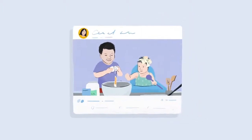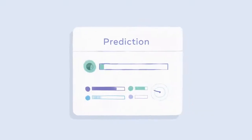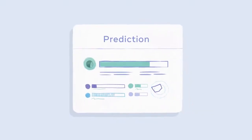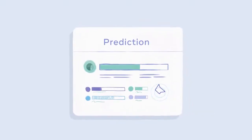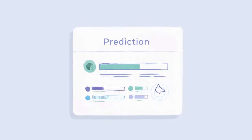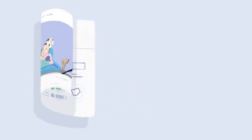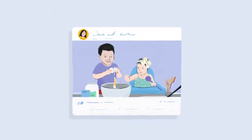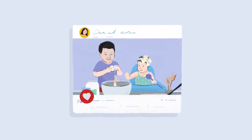The algorithm uses the signals to make predictions about the post, based on how likely it's relevant to me, whether I might interact with it, and if it's worth my time. I usually like a lot of my sister's posts, so I'll probably like this one.